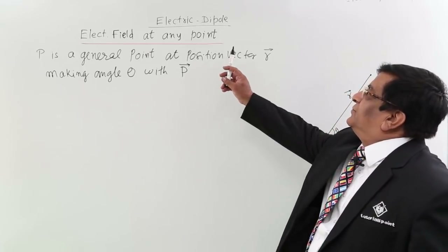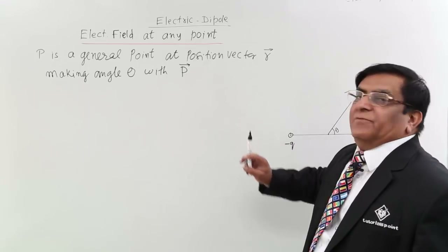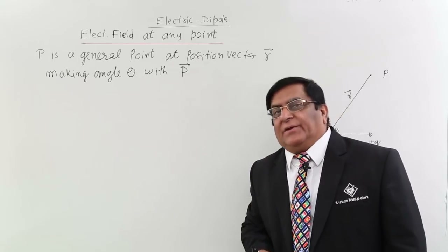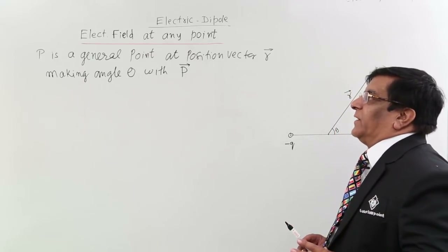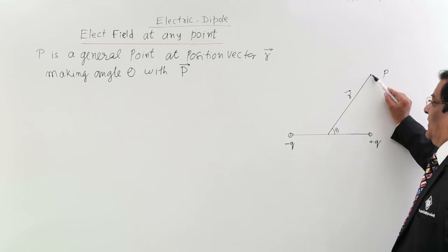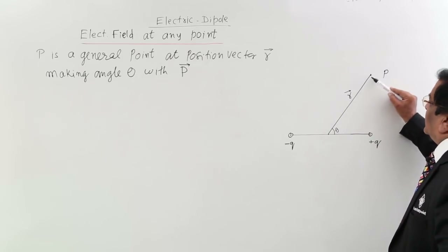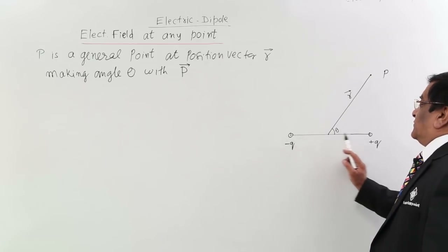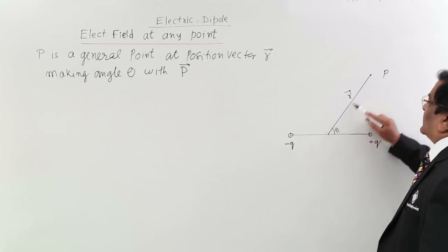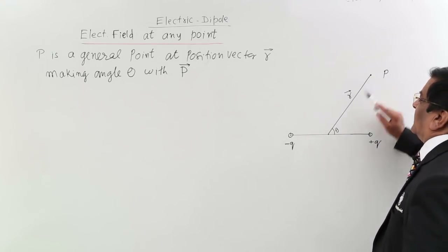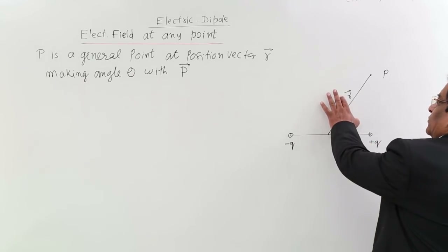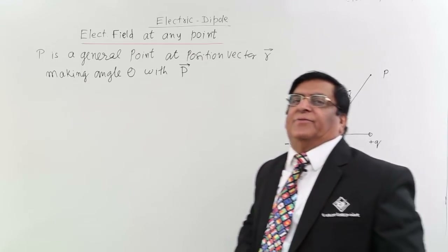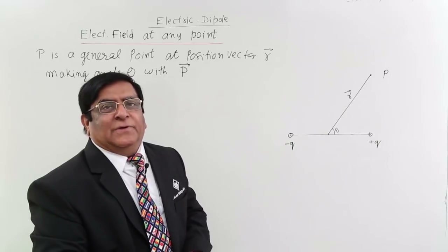Now we will study the electric field due to a dipole at a general point — neither on the axial line nor on the equatorial line. P is a general point at a position vector r, and this position vector r makes an angle theta with the dipole moment p. The direction of dipole moment is from minus to plus. We have to find out the electric field at P in terms of r and theta.